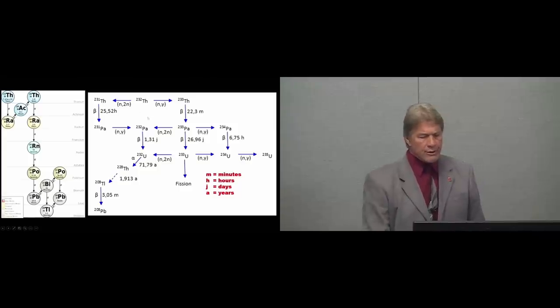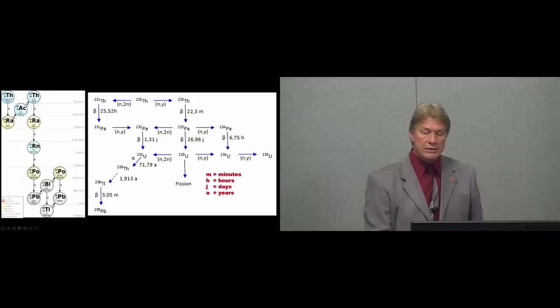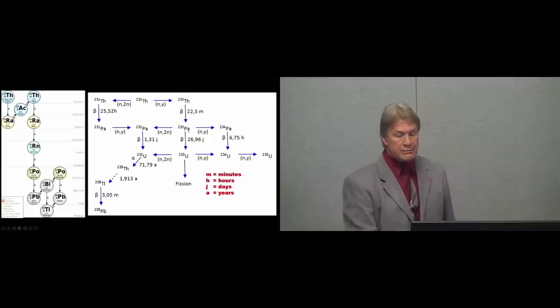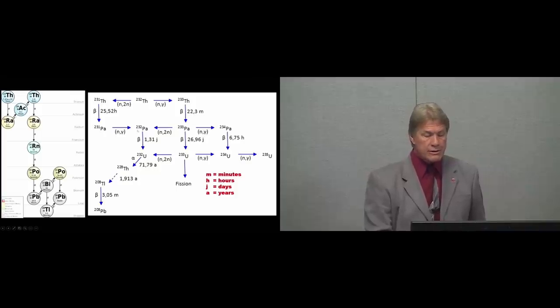So here is thorium-232. In a nuclear reactor, I have lots of neutrons. This symbol means a neutron comes in, a gamma ray comes out. Rarely it will go this way - the neutron-to-neutron reaction chance is lower. Most of the time it makes thorium-233. We've added a neutron. But this is very unstable, and in 22 minutes it decays to protactinium-233. Protactinium-233 could get hit by more neutrons, but most of the time it will simply beta decay in 27 days to uranium-233.